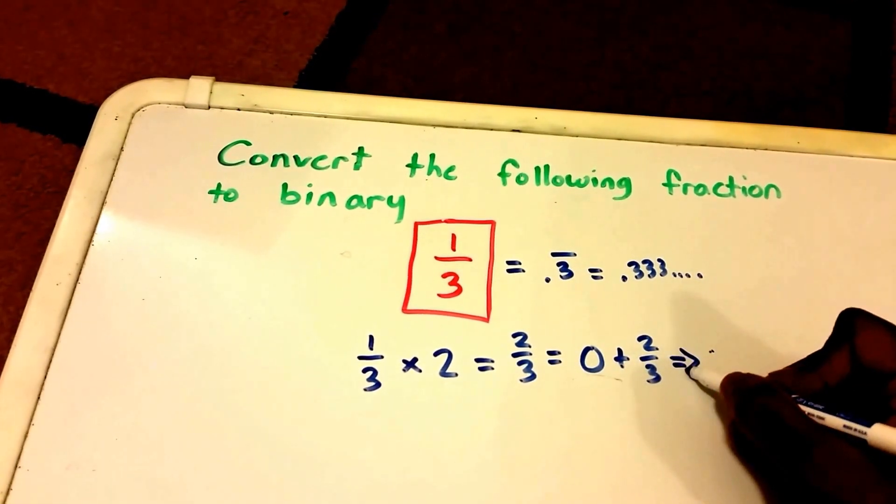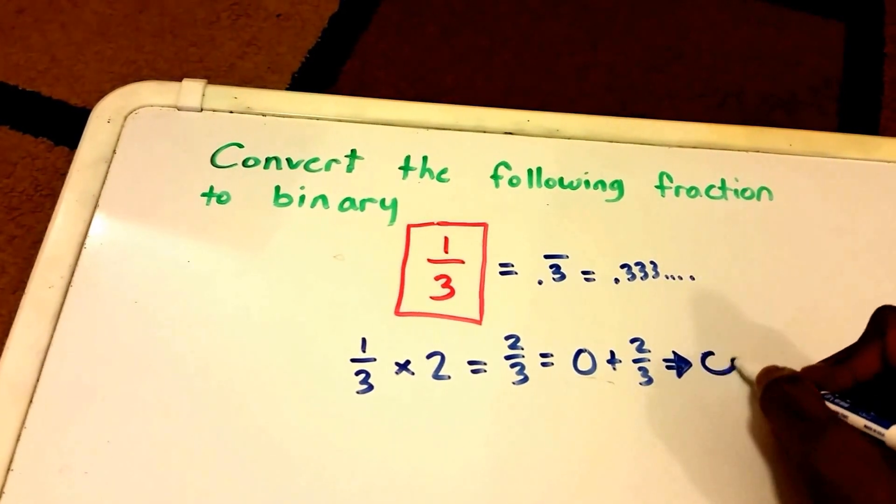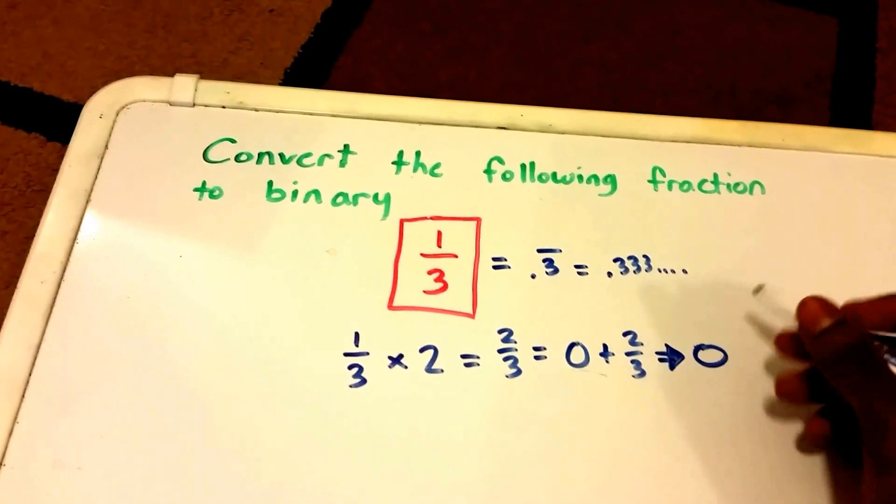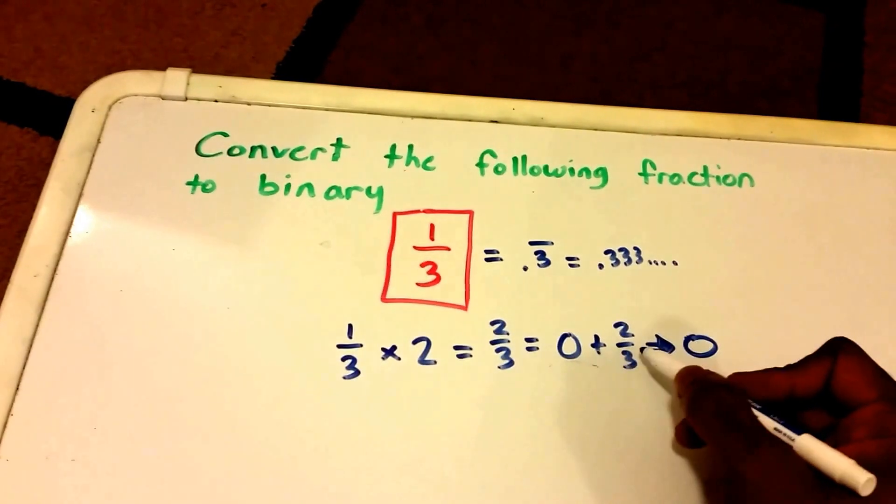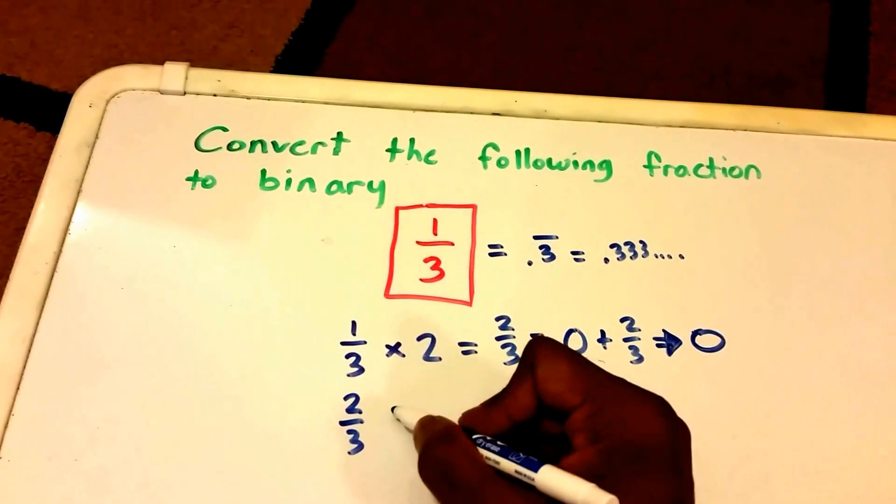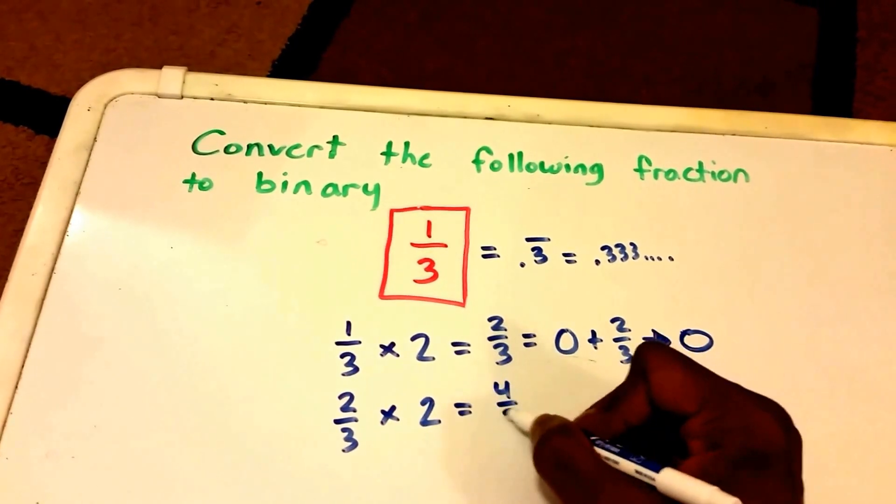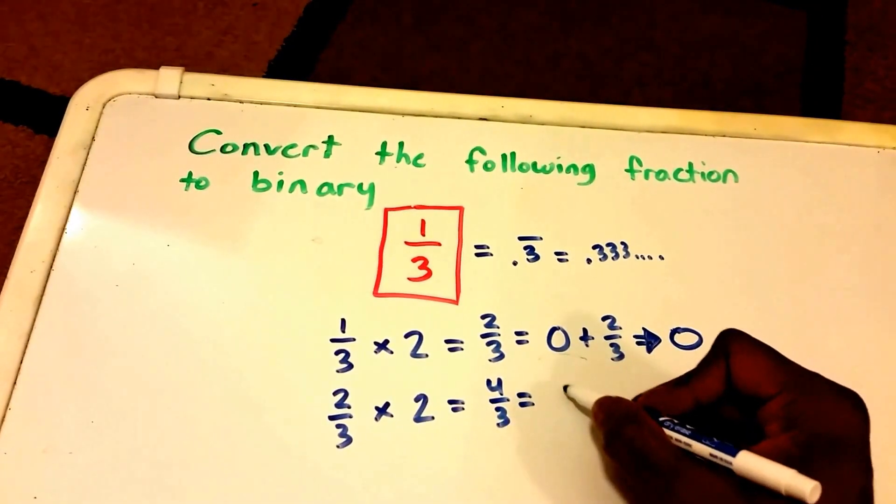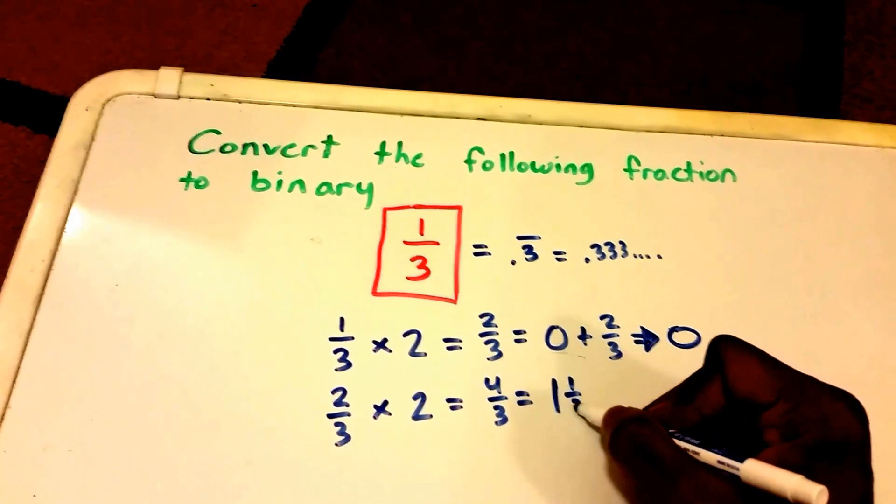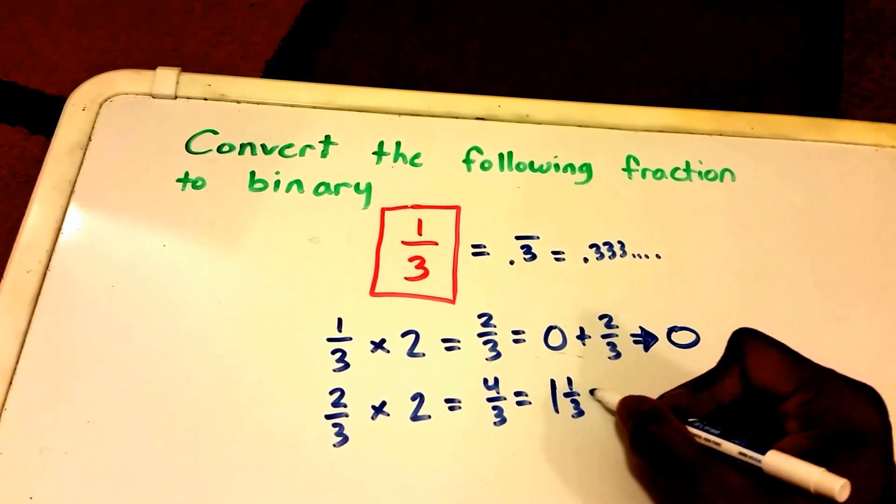Then we take the rest of the fraction, which is 2/3, and multiply that by 2 to get 4/3, which is equal to 1 and 1/3, which is equal to 1 plus 1/3.